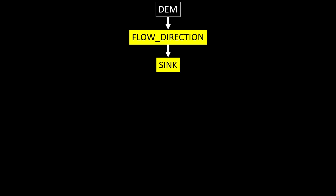From the flow direction, we can then identify whether there are any sinks or pits in the surface. If we do identify sinks, we have to fill those pits. We run a fill operation that fills those sinks. This is where we're kind of manipulating reality — these pits and sinks exist in the real world, but to get to what we want, a perfect DEM, we have to do some manipulation.